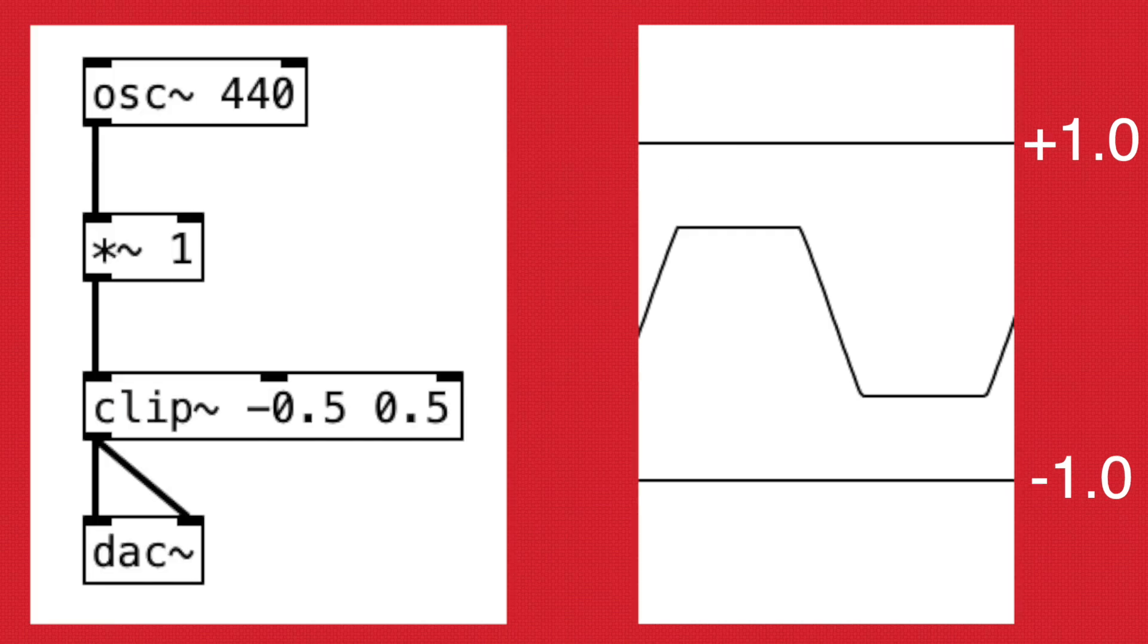So let's run it through the clip object with the setting of negative 0.5 and positive 0.5. As we can see, the waveform cuts off anything above positive 0.5 and below negative 0.5.